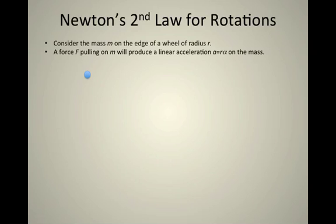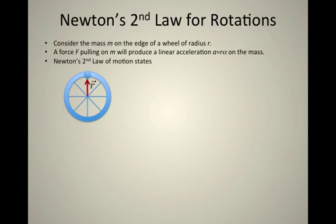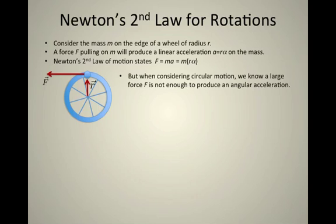But remember that's also just going to cause the wheel to spin. Newton's second law of motion states that a force will equal mass times acceleration, so F equals ma. But since that a is going to be related to how fast we get the wheel to start spinning, that's also equal to m times r times alpha.